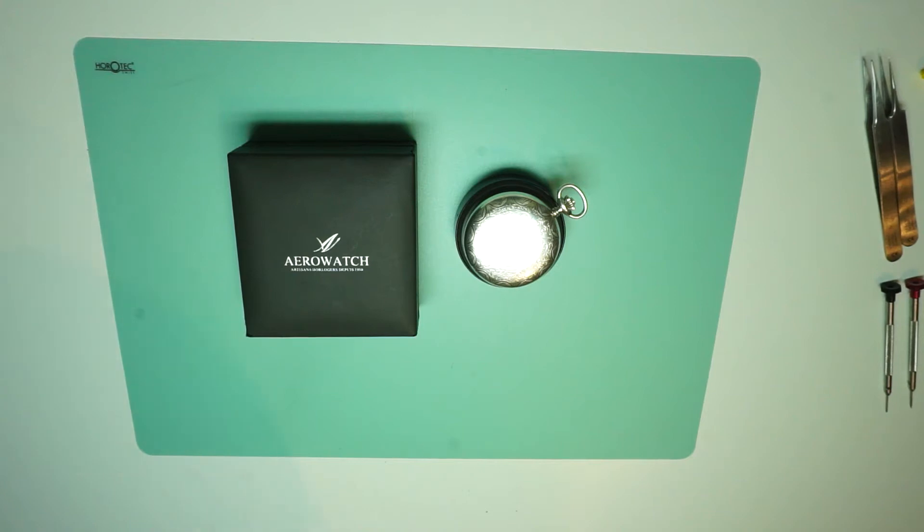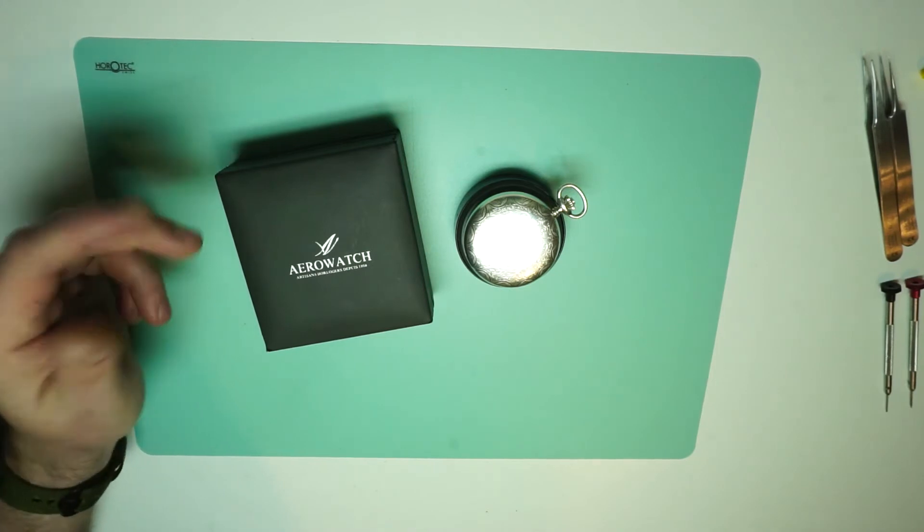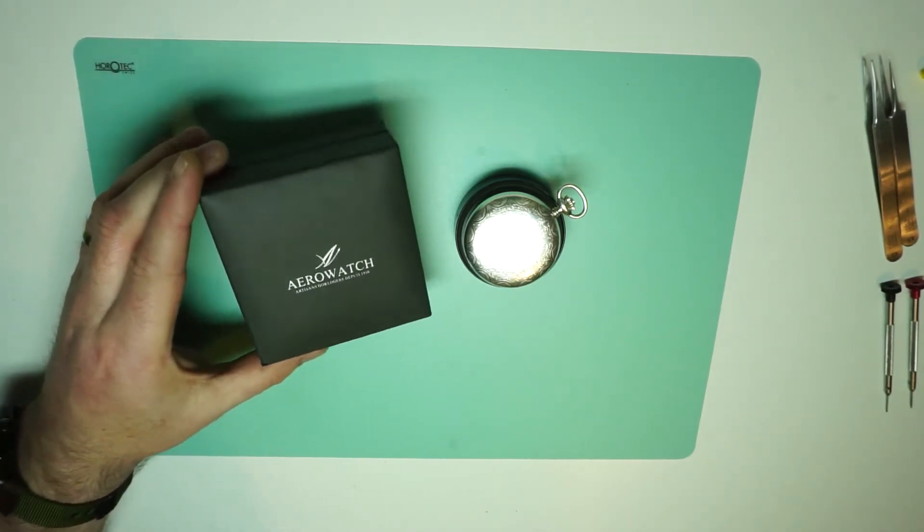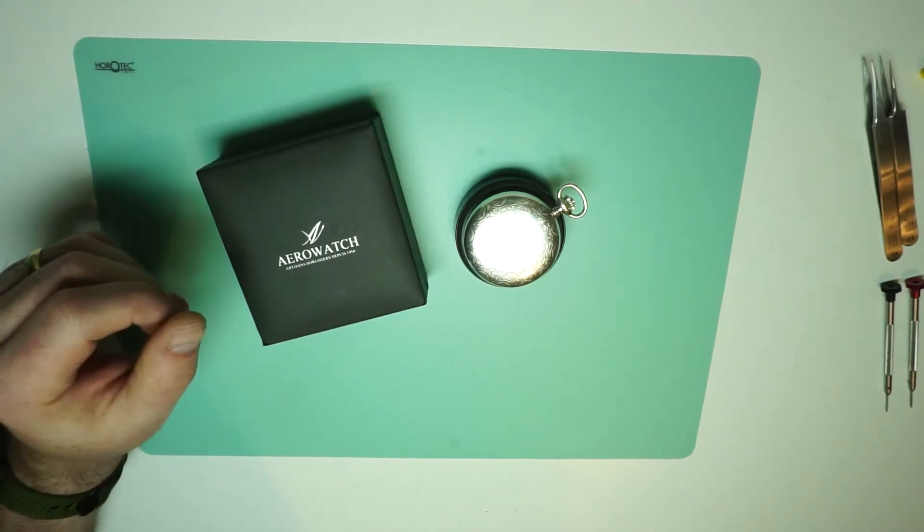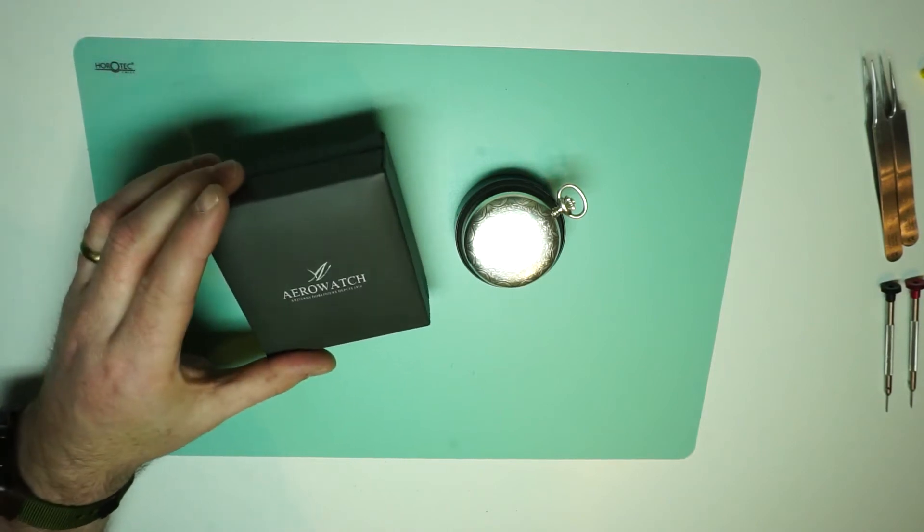So the watch we're going to look at today is actually a pocket watch. It's a fairly modern pocket watch that's made to look traditional and this one's made by Aerowatch. Aerowatch has been around since about 1910 and they do a whole series of different wrist and pocket watches, all Swiss made.